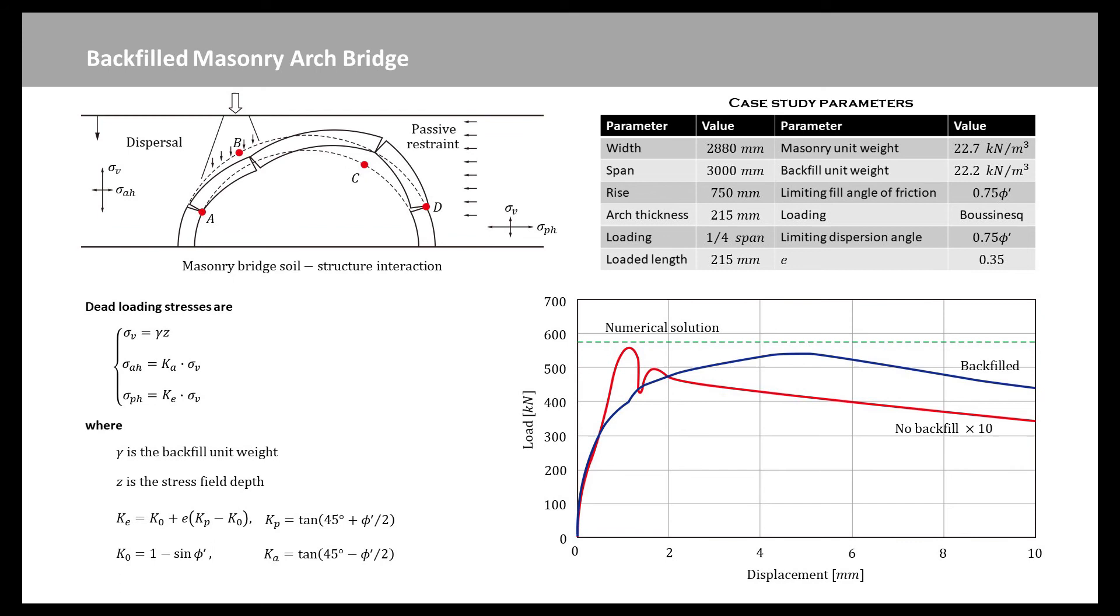For small loads and negligible arch movements, Boussinesq stress distribution is used to estimate the increase in vertical stresses due to the live load. Whilst the kinematics of the arch and soil on the passive side are more closely related to an anchor pull-out, analysis tends to apply classical retaining wall theory to compute changes in the horizontal stresses. We can look at the correlation between the experimental results and the numerical results and check that we are getting reasonable correlation.